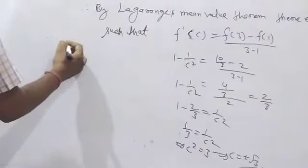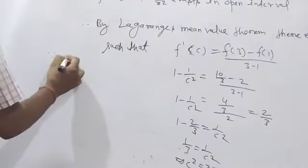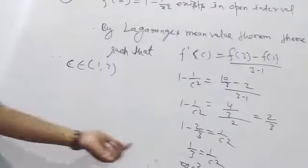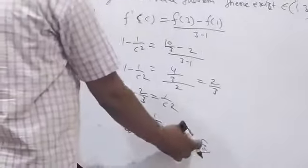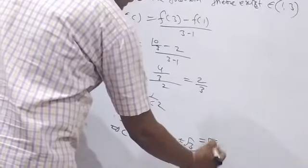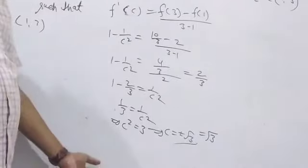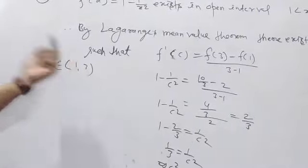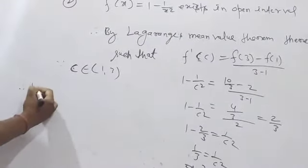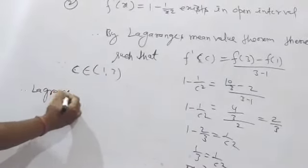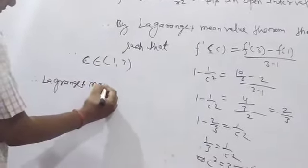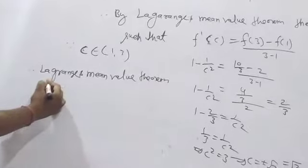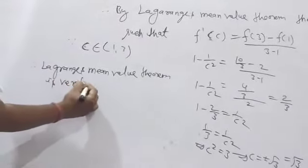Since c belongs to (1, 3), we take the positive value. c = +√3 ≈ 1.732. Since 1.732 lies between 1 and 3, therefore the Lagrange Mean Value Theorem is verified.